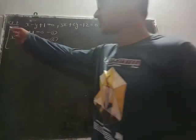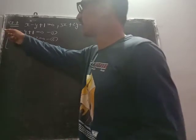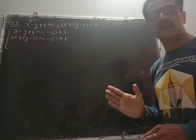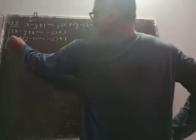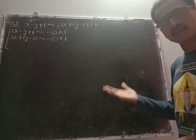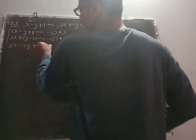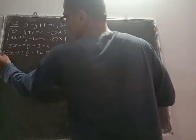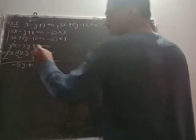The elimination method is to make the x coefficients the same. This coefficient is 1 and this coefficient is 3. So we will multiply the whole first equation by 3. So 3 times x gives 3x minus 3y plus 3 equal to 0. The second we will multiply by 1 only. Now we will change the sign and subtract: minus 3x, minus 2y, minus 3, plus 3 plus 2 gives 5y, minus 5y plus 15 equal to 0.